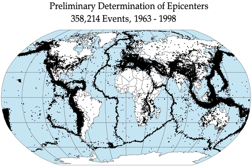The energy released was approximately twice that of the next most powerful earthquake, the Good Friday earthquake, centered in Prince William Sound, Alaska. The ten largest recorded earthquakes have all been megathrust earthquakes; however, of these ten, only the 2004 Indian Ocean earthquake is simultaneously one of the deadliest earthquakes in history.